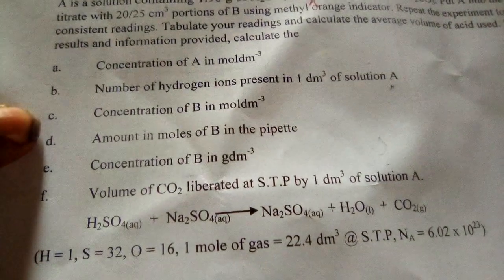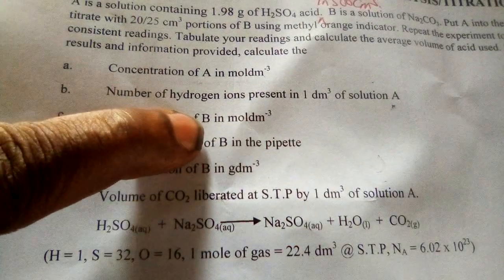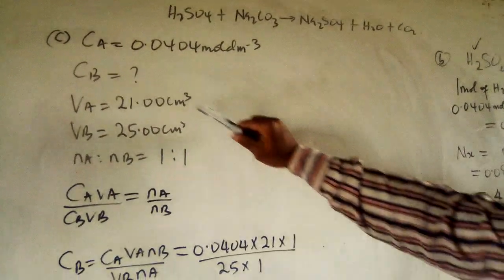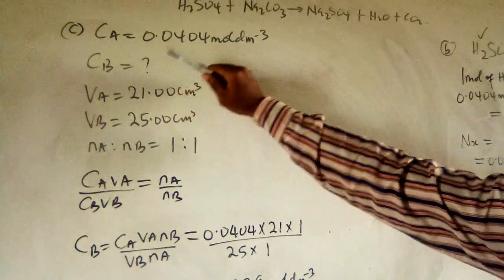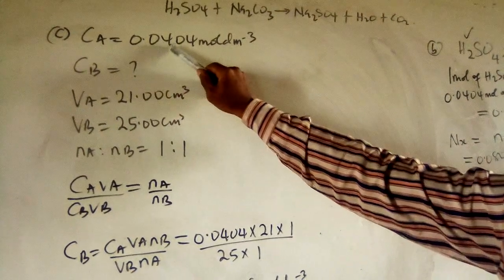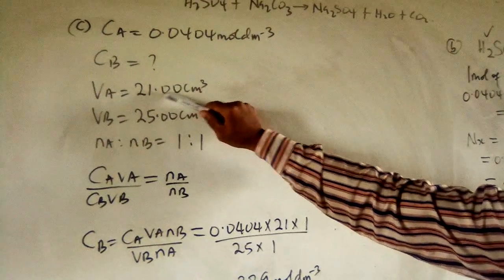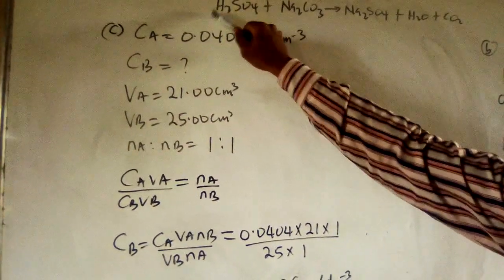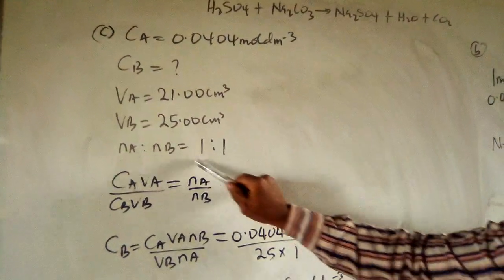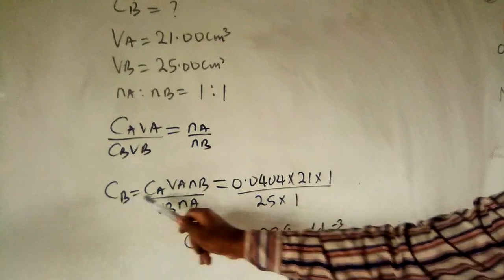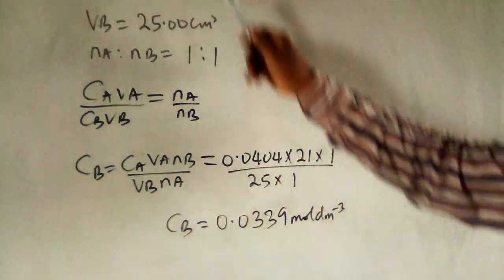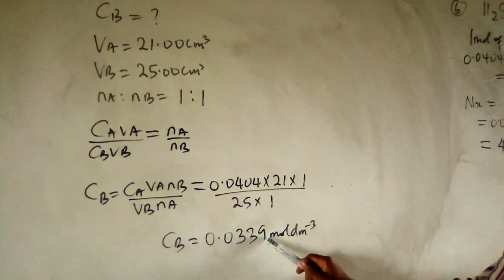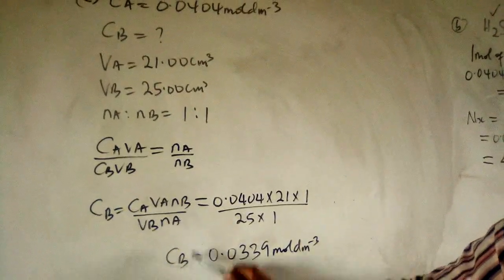Question C asks for the concentration of B in mol/dm³. Using the titration formula with CA = 0.0404, VA = 21.00, VB = 25.00, and mole ratio 1:1, we solve for CB. CB = (CA × VA) / VB = (0.0404 × 21.00) / 25.00 = 0.0339 mol/dm³.